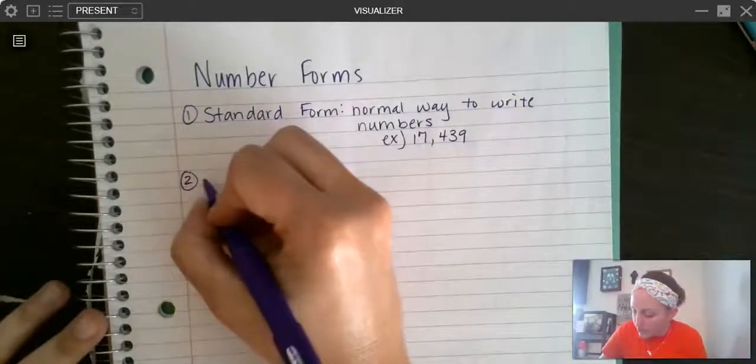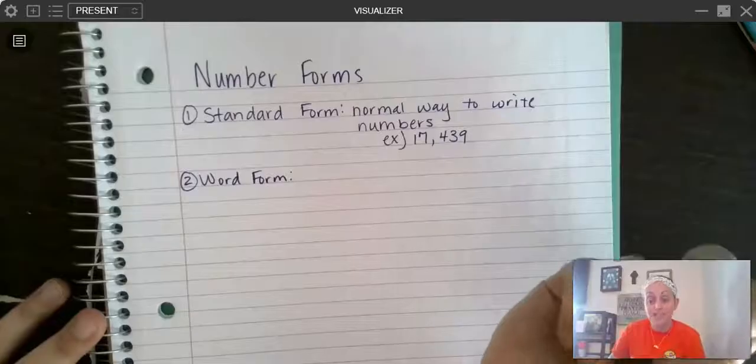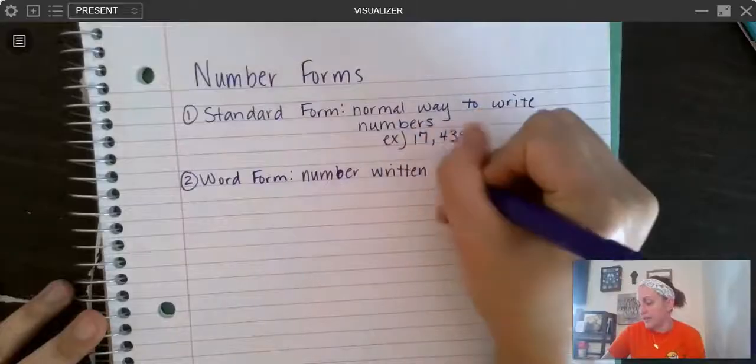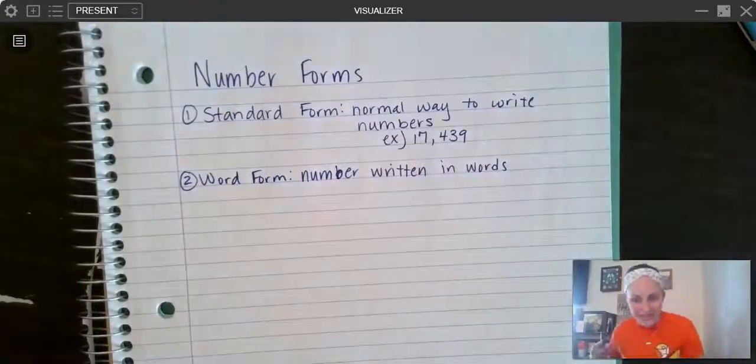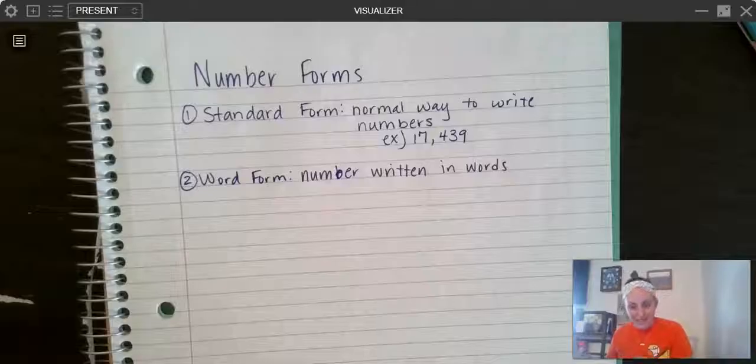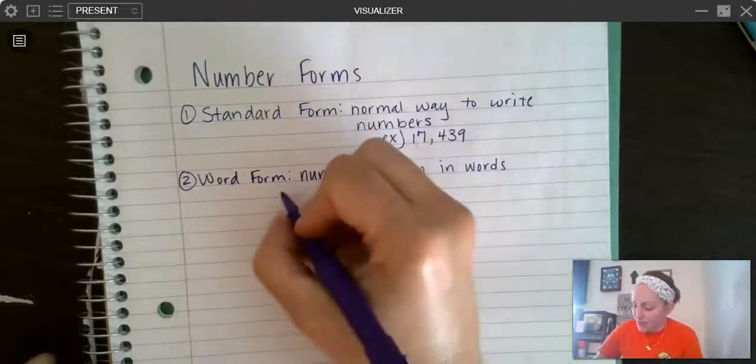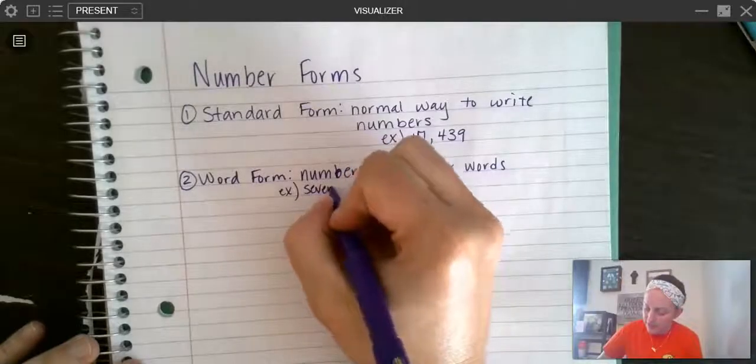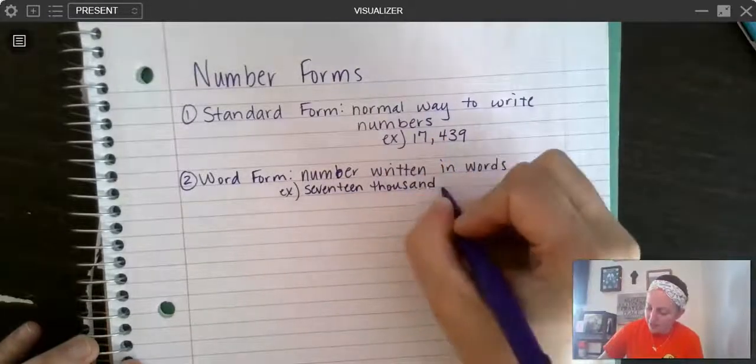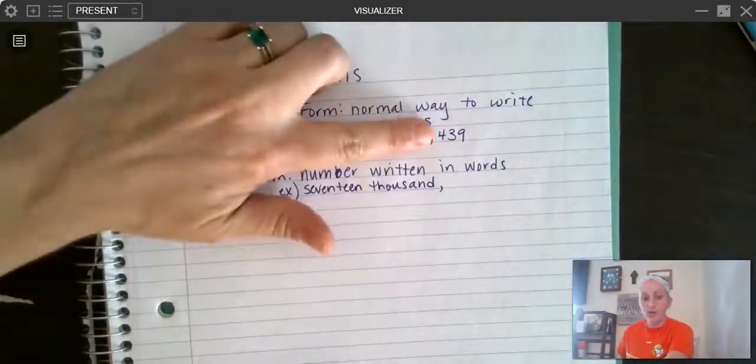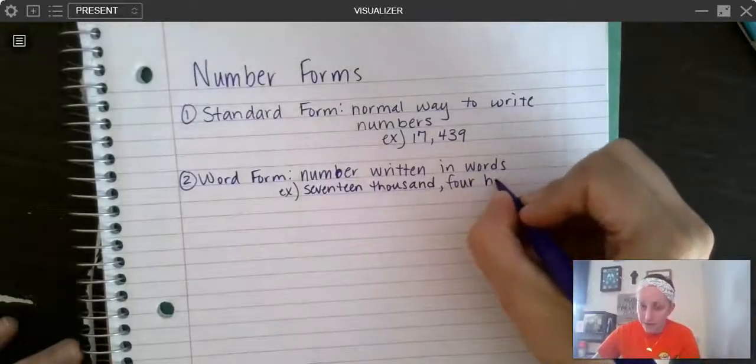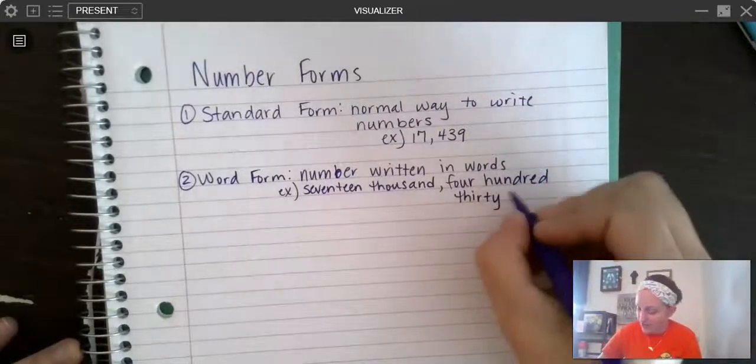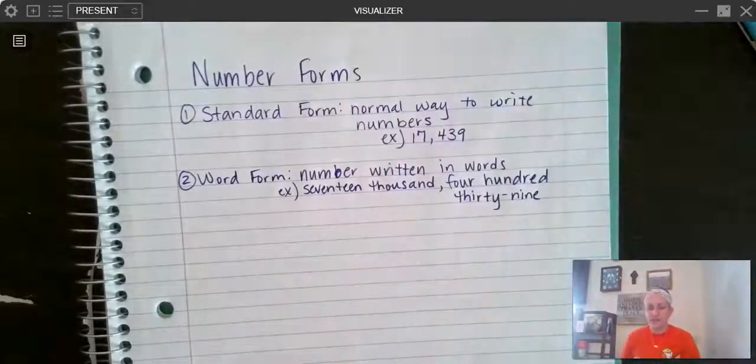The second way that we write numbers is word form. And if you had to guess, I bet you could guess that word form is the number written in words. So this is where you write what you say. Remember when we're reading the number, we say what we see. And then when we're writing in word form, we write what we say. Here's my example of word form. I'm going to use the same number. Remember it's 17,000, and then we put our comma there. The comma still goes in the word form too. 439. Remember the word 'and' does not show up in numbers until you get to decimals. So I don't want to see 439 and because that's not how you say it.